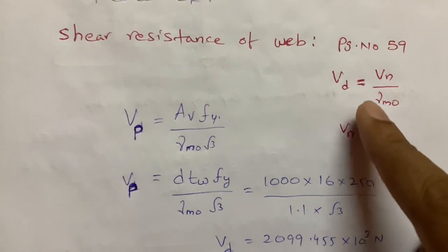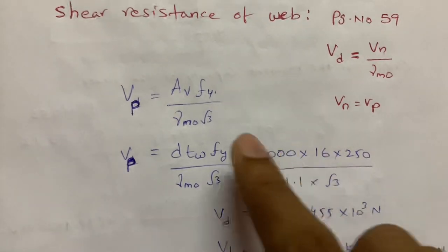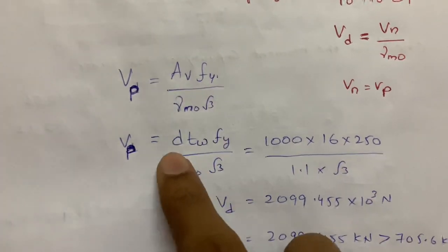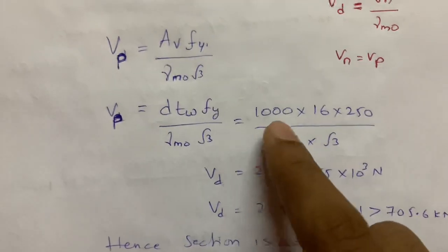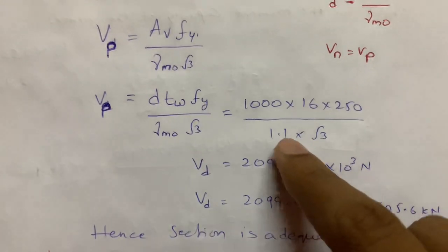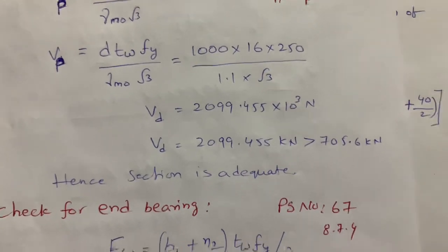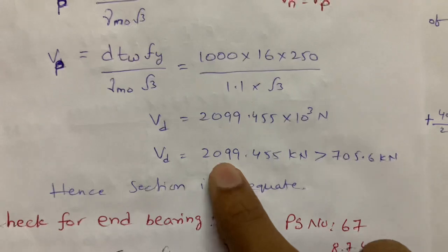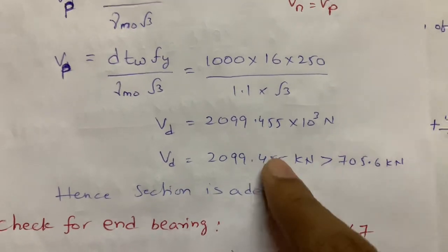For shear resistance of the web, per IS 800:2007 page 59: Vd = Vn / γM0, where Vn = Vp = Av × Fy / (γM0 × √3). Av = D × TW = 1000 × 16 = 16,000 mm². Substituting Fy = 250, γM0 = 1.1: Vd = 2099.455 kN, which is greater than the applied shear force of 705.6 kN. Hence the web is safe in shear.